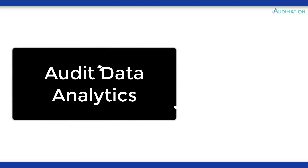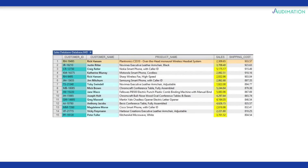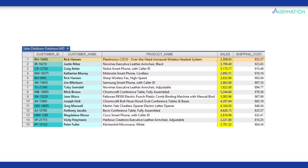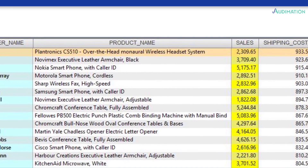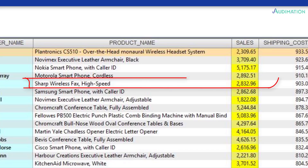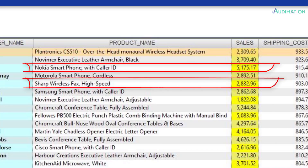Let's focus on the word 'data' in audit data analytics. The data referred to here is not summary information — it is the detail. It's the lowest common denominator: the highly granular detail rows that are the origin of a transaction. Ideally, this is what we want to analyze and test using data analytics software.